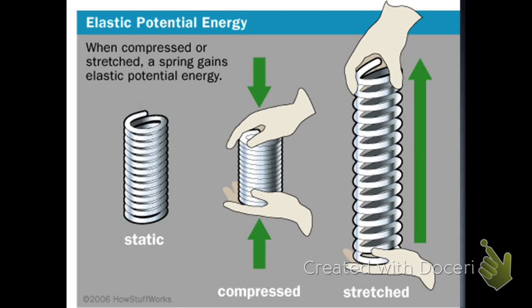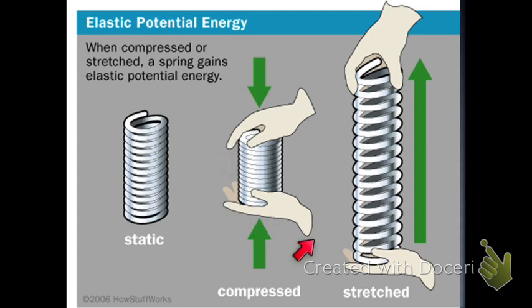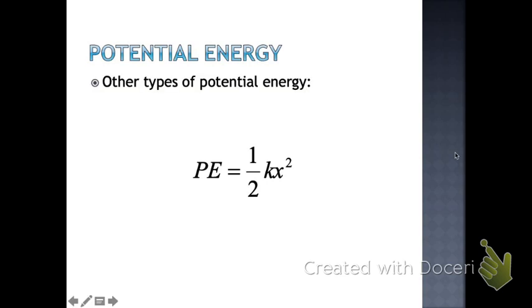A static spring is at its rest, most relaxed state. Compressed means to squeeze it together, and stretched means to pull it apart. If a spring is anywhere besides its static position, it contains potential energy — both when compressed and when stretched. If either of those characteristics is happening, it contains potential energy. These are the types of potential energy: elastic and springs, meaning things that return to their original shape.